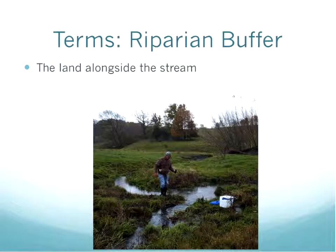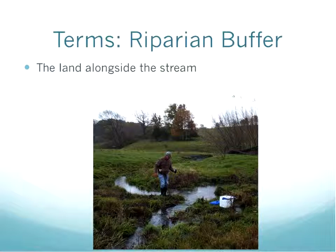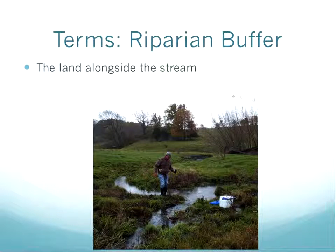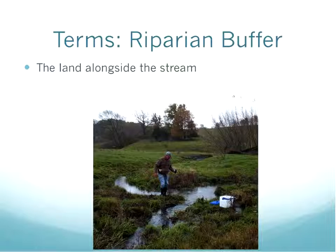I've pulled out some key terms from the data sheets. Some were used on the old habitat assessment, some are new. They're all explained in the habitat assessment methods document — I sent you a link when I advertised this webinar. I did update this document to align with the new DNR qualitative habitat assessment, so if you were trained a number of years ago, your habitat methods document will be slightly out of date. The first term: riparian buffer. The riparian area is the land next to or alongside the stream — generally, where you're standing if you're not in the stream.